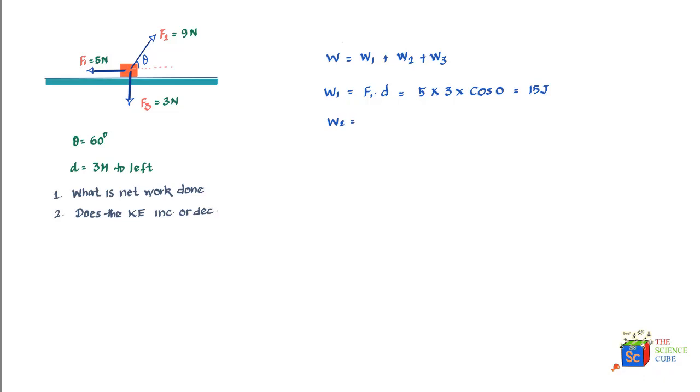W2 would equal the dot product of force two and displacement, which would equal nine newtons into three meters, and the angle between force f2 and displacement is 120 degrees because theta is given as 60 degrees. So we'll write cos of 120, and this if you calculate is minus 13.5 joules. It seems obvious that force two is actually acting against the displacement. It is reducing the energy of the box. The box is moving in the left direction, the force is largely acting in the right direction, and that's the reason you're getting a negative value.